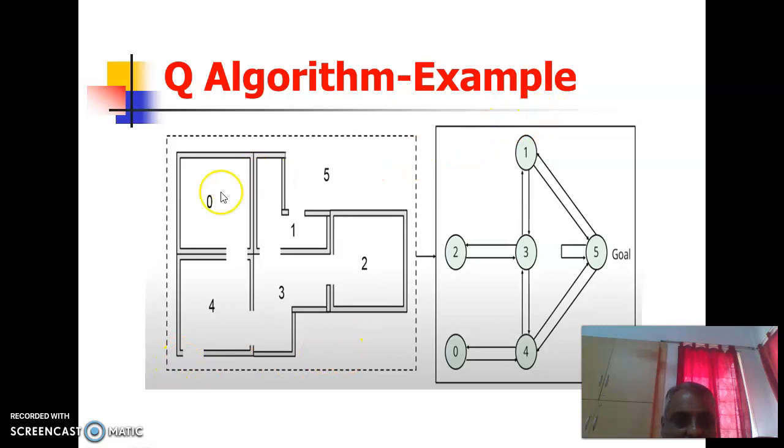By seeing this environment we can draw a state action diagram. This is state action diagram, so you have 0, 1, 2, 3, 4, 5. As seen here you have a direct connection from 1 to 5, and 5 to 1 also direct connection is there. From 3 to 1 there is a connection, 1 to 3 connection is there and 5 to 5 internal loop is there.